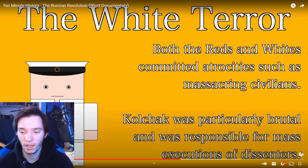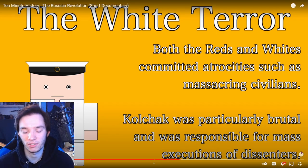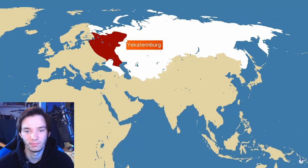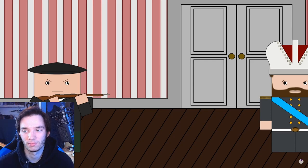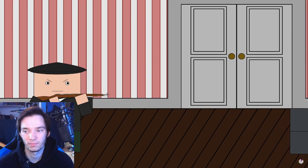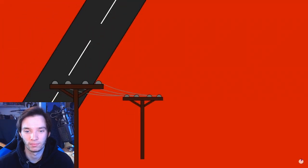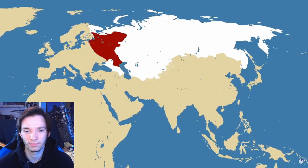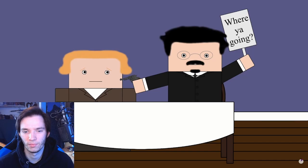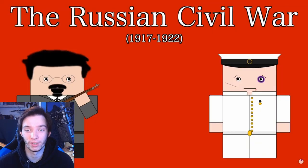Kolchak was particularly brutal and responsible for mass executions of dissenters, turning many to the Bolshevik cause. He did manage to capture Ekaterinburg, where the former Emperor was being held. The Bolsheviks didn't want the Emperor to fall into enemy hands, and so he and his family were executed on July 17th, 1918. The Reds had the advantage of geography — their territory was more compact with greater industrialization, better infrastructure, lines of communication, raw materials, and a larger population. To maintain order, the Bolsheviks began the Red Terror: sending dissidents to work camps, shooting protesters, and Trotsky holding the families of generals hostage so they'd stay loyal.